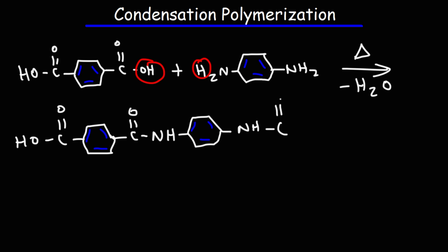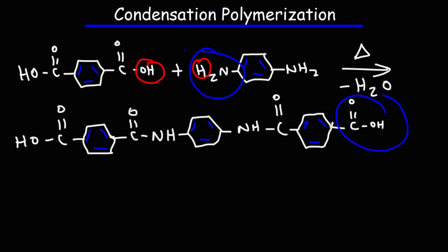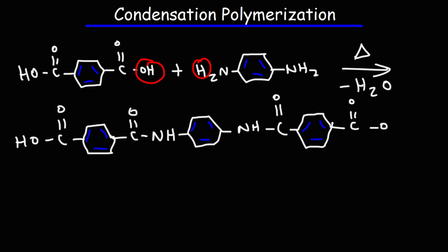Here we're going to have a carbonyl group, the benzene ring, and then another carboxylic acid. We can continue the reaction by reacting this carboxylic acid with the amino group in this molecule, extending the chain. Once again we lose the OH group and just one hydrogen, we get an NH group, and this just continues.